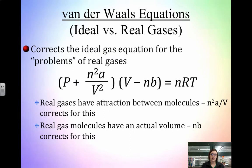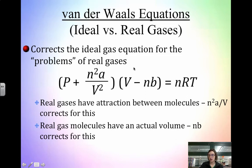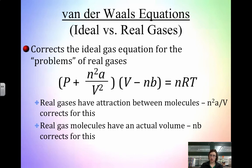We can also correct the ideal gas equation when dealing with real gases. The ideal gas equation can be adjusted to account for deviations in volume and pressure — this is called the Van der Waals equation. You won't have to do calculations with it, but you need to know why these constants are used. The pressure adjustment accounts for molecular attraction and repulsion due to intermolecular forces. We use n²a/V², where n is moles, V is volume, and a is a constant measuring how strongly gas molecules attract one another.